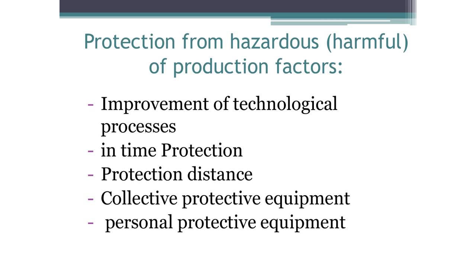Protection strategies include improvement in the technological process — for example, the use of less toxic chemicals. There is time protection: the employee should not come into contact with harmful substances for a long time. There is distance protection: the further the employee is from the source of the harmful factor, the less harmful the impact. Collective protection equipment protects several tens or hundreds of employees at the same time — for example, a good ventilation system or thick walls protect against toxic substances and radioactive radiation. Personal protective equipment, such as gas masks and protective suits, protects one person at a time.